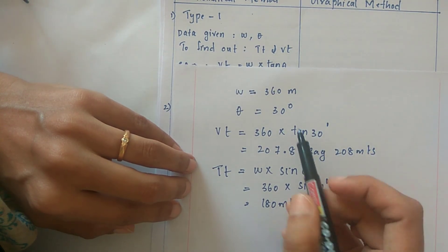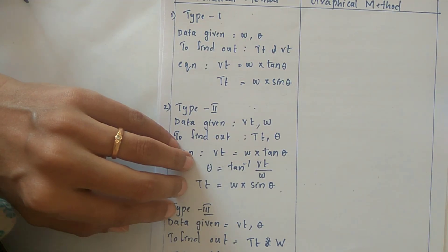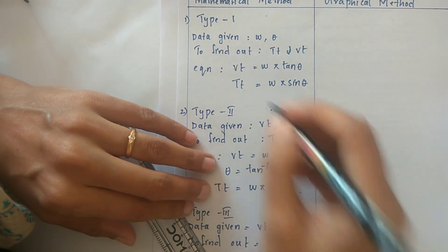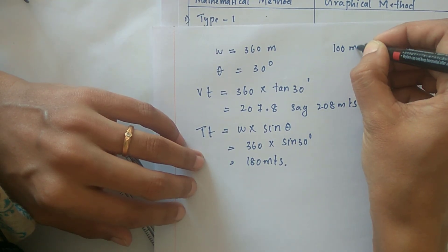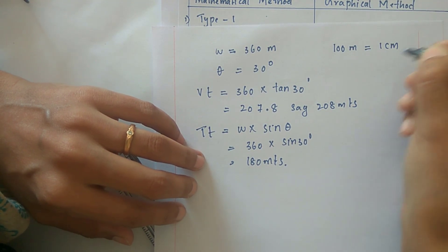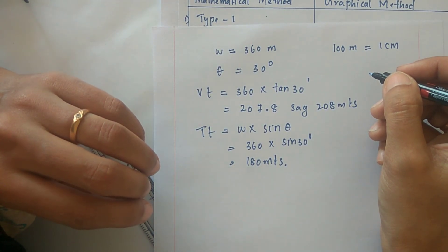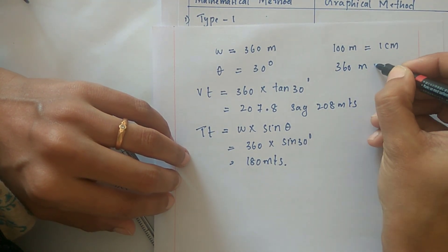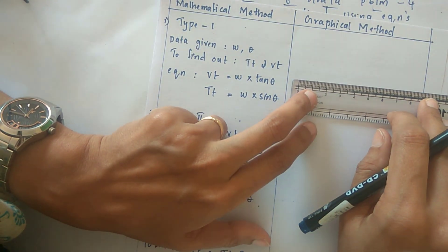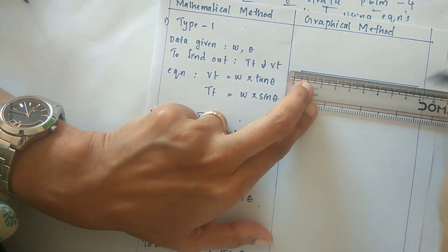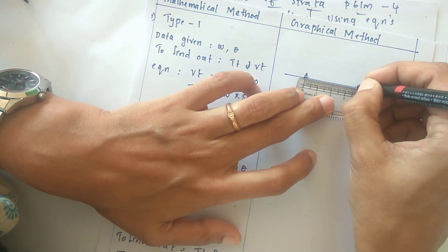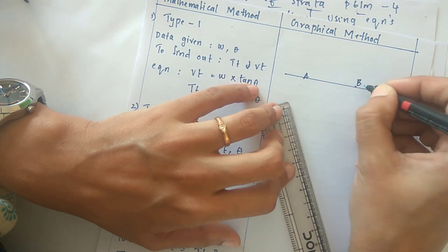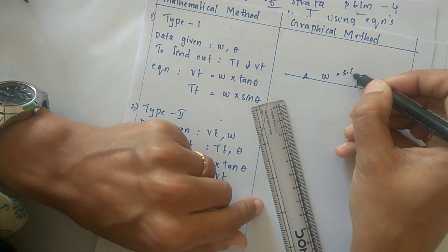Now we will see how to find the answers using the graphical method. The scale we follow in all geological mapping cases is 100 meters equal to 1 centimeter. So 360 meters becomes 3.6 centimeters. Take the scale and draw a horizontal line; mark any one point as A on the line. From A to another point, take 3.6 centimeters and mark the point B. This A-to-B distance is called W, that is 3.6 centimeters.